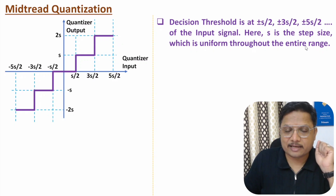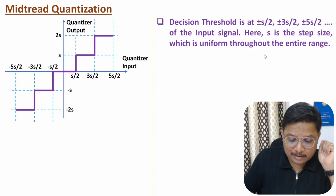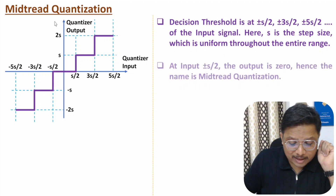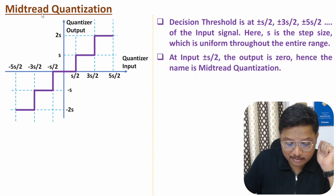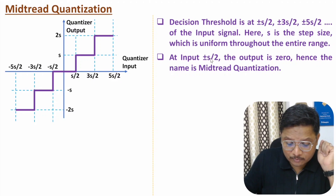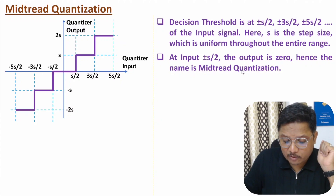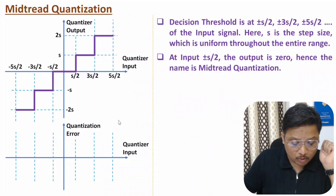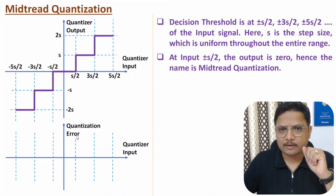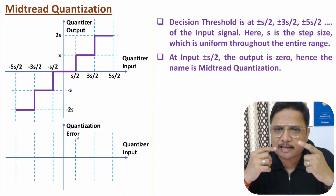The name of this quantization is mid-tread because at input plus or minus s/2 our output is 0, as you can observe in the characteristics. Now I'll explain quantization error. One should know that quantization error is the difference between the quantized signal and the input signal.